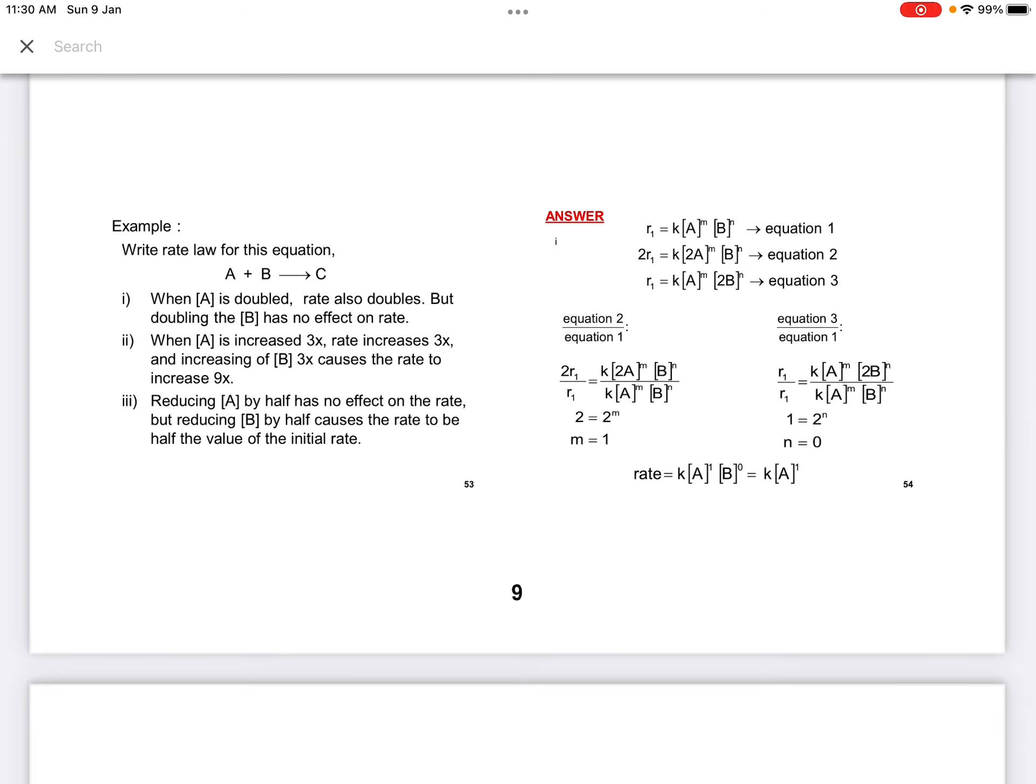Example number 2. This one we shall discuss in our tutorial class in detail. We will have questions about this. But just for your understanding, this is more about the factors. Looking at doubling the concentration, what will happen. For the reaction, if A is doubled, the rate also doubles. But doubling the B has no effect. Mathematically, I think this is quite difficult to show here. If I mention or explain, we will practice this one in our tutorial class. Please remind me.